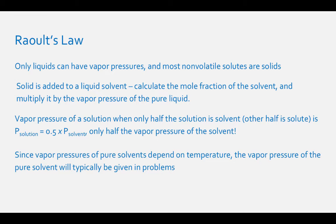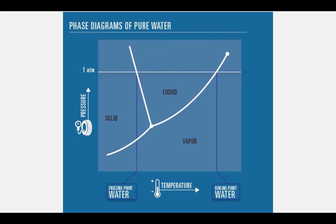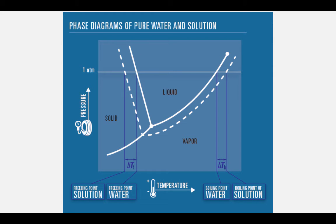We can visualize vapor pressure by looking at a phase diagram. The phase diagram of a pure solvent, in this case water, is shown with the solid line. The phase diagram of that same solvent with solute in it—a solution—is shown with the dashed line. The liquid-gas line is lower for the solution than the solvent, caused by the vapor pressure lowering of the solution.